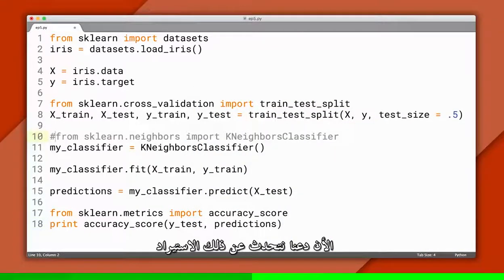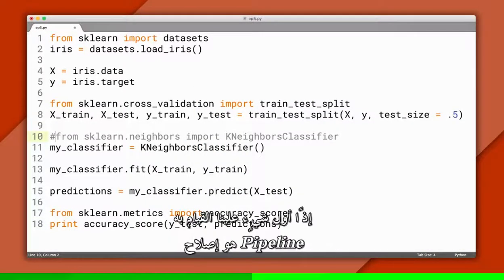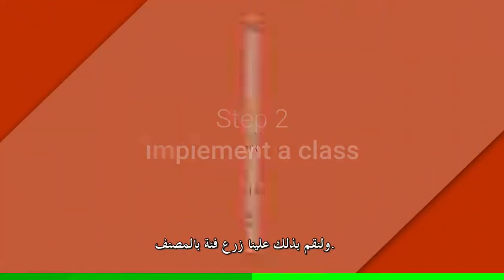Now let's comment out that import. Right off the bat, this breaks our code, so the first thing we need to do is fix our pipeline. And to do that, we'll implement a class for our classifier.